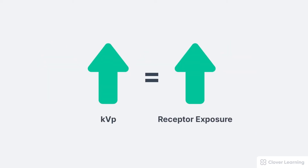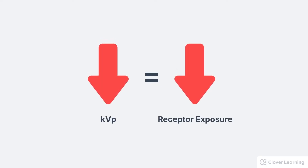KVP also affects the receptor exposure — that's the quantity of photons striking the image receptor. If we increase the KVP, this increases the receptor exposure, which is an effect of the increased beam intensity and because increased energy results in more penetration through the patient. Decreasing the KVP decreases the exposure to the receptor because fewer photons are created and fewer photons will penetrate through the patient.